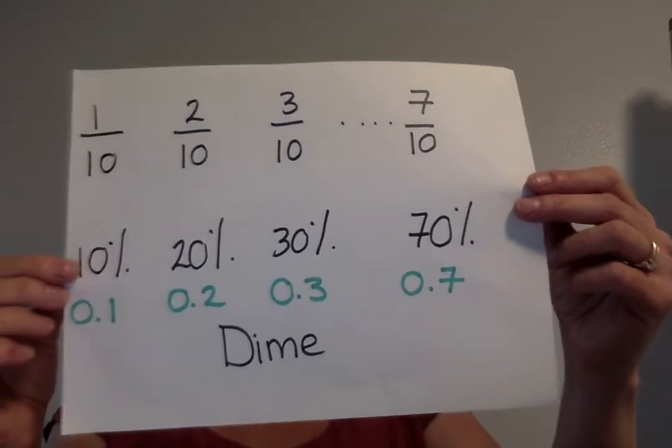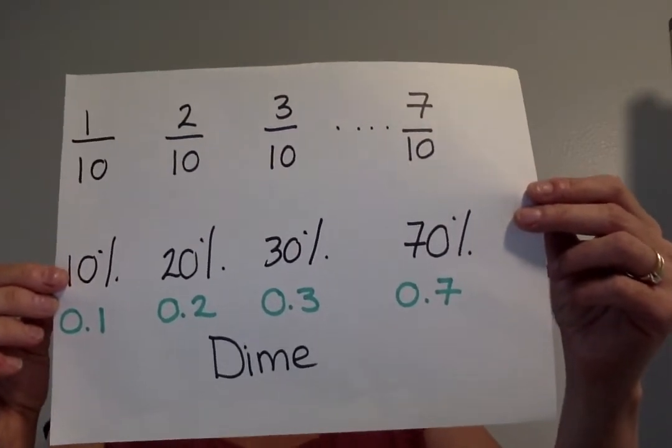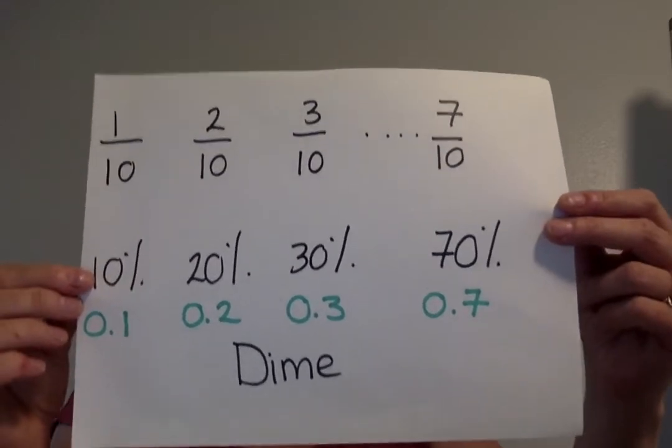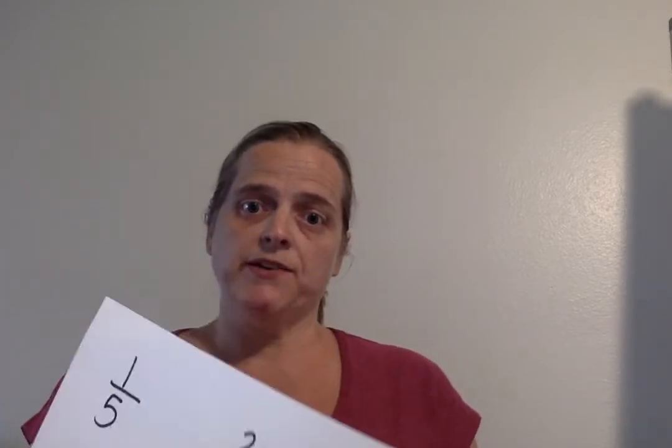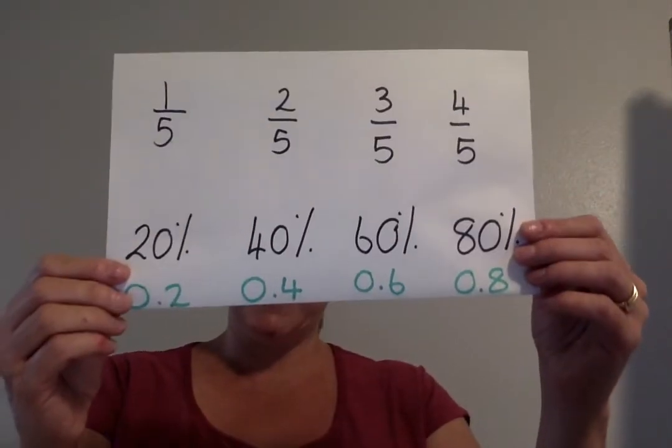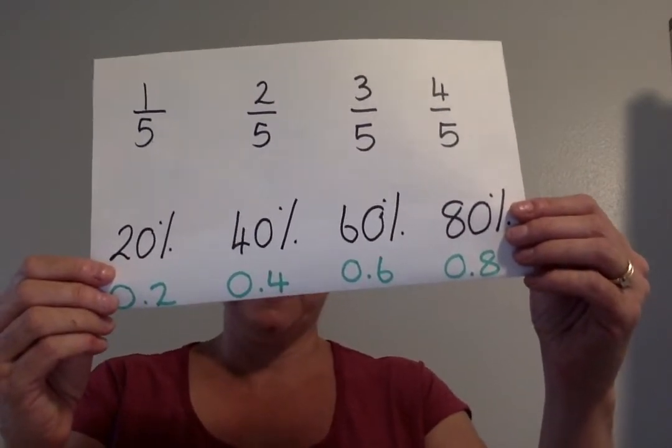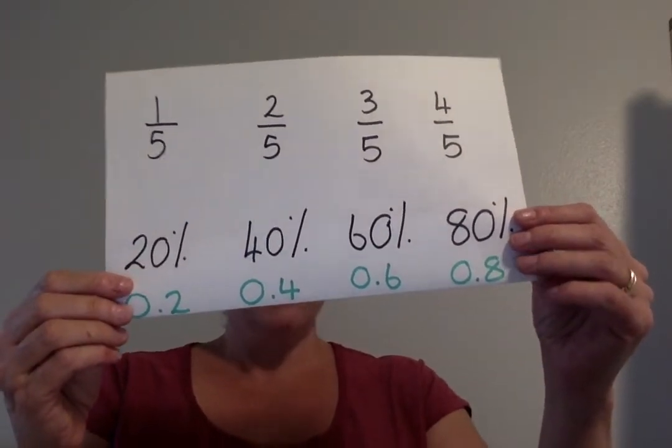Three tenths, 0.3, 30 percent, and so on. Now you're going to wish you lived in Scotland because we have a 20 pence. 20 pence—that means there's five 20 pences that equal 100, so...